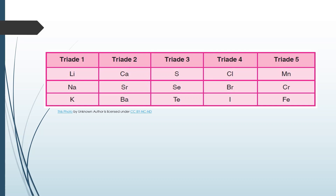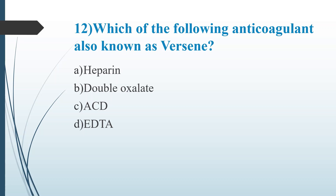Twelfth Question: Which of the following anticoagulants is also known as Versene? Option A: Heparin, Option B: Double Oxalate, Option C: Acid, Option D: EDTA. Answer is Option D, EDTA — Ethylene Diamine Tetraacetic Acid. EDTA is a chelating agent; it inhibits clotting by removing or chelating calcium from the blood. That is why it is also known as Versene.